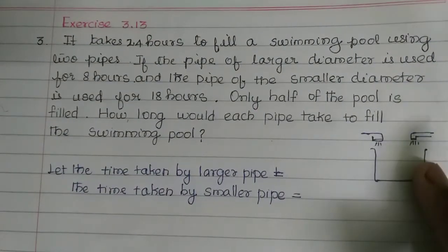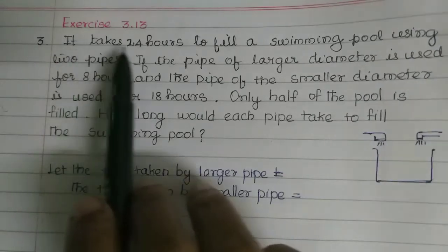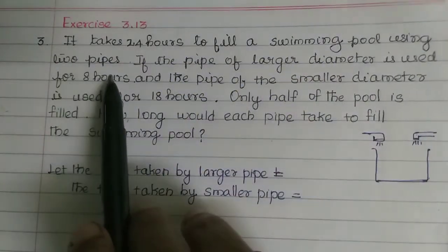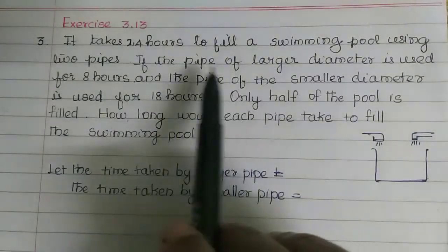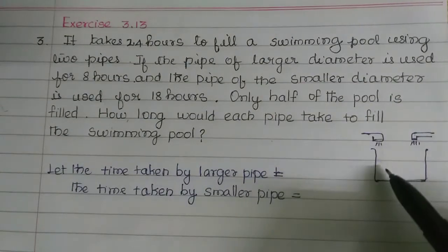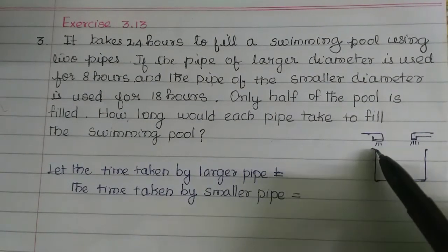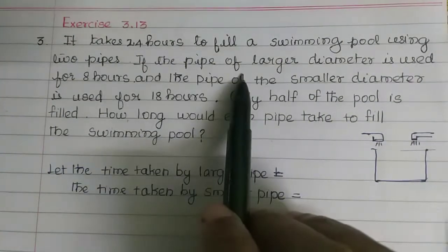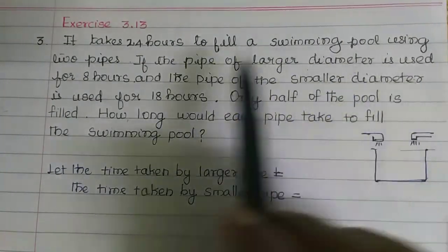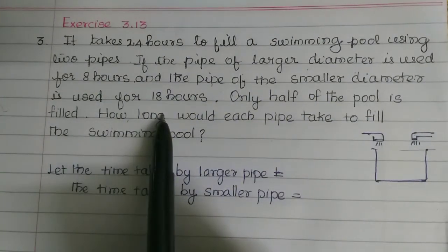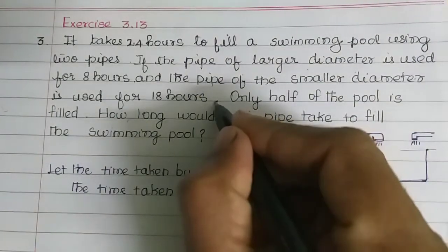Hi students. In this video we are going to do exercise 3.13 in the 3rd exam. It takes 24 hours to fill a swimming pool using 2 pipes. If the pipe of larger diameter is used for 8 hours and the pipe of smaller diameter is used for 18 hours, only half of the pool is filled.